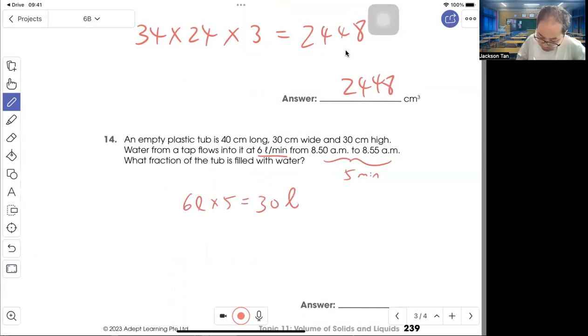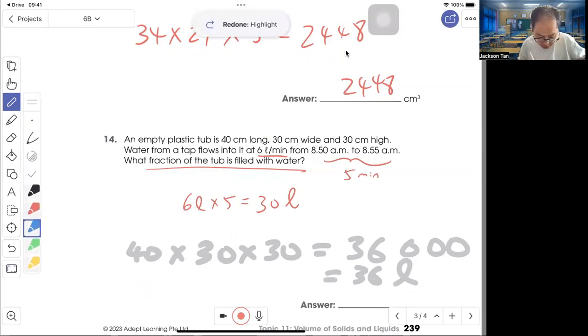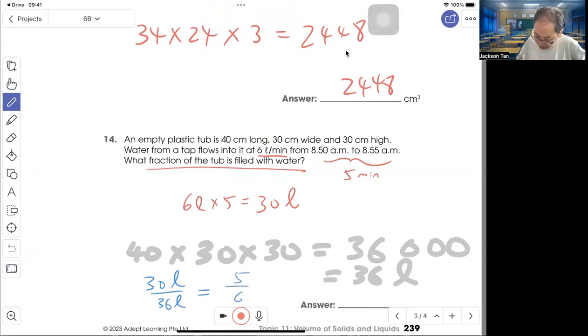Find the fraction of the tank filled with water. The plastic tank volume is 40 times 30 times 30 equals 36,000 cm³, which is 36 liters. Now you just put it as 30 liters out of 36 liters. In simplest form, that is 5 out of 6. So 5 out of 6 of the tank is filled with water.